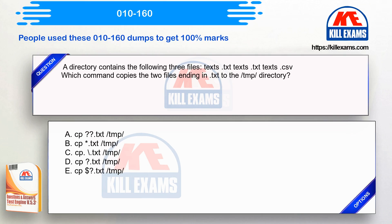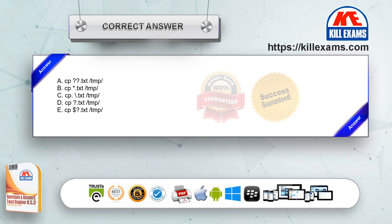A directory contains the following three files: texts.txt, texts.text, texts.csv. Which command copies the two files ending in .txt to the /tmp/ directory? Option A: cp text* /tmp/. Option B: cp *.txt /tmp/. Option C: cp \*.txt /tmp/. Option D: cp text /tmp/. Option E: cp $?.txt /tmp/. The correct answer is option B.